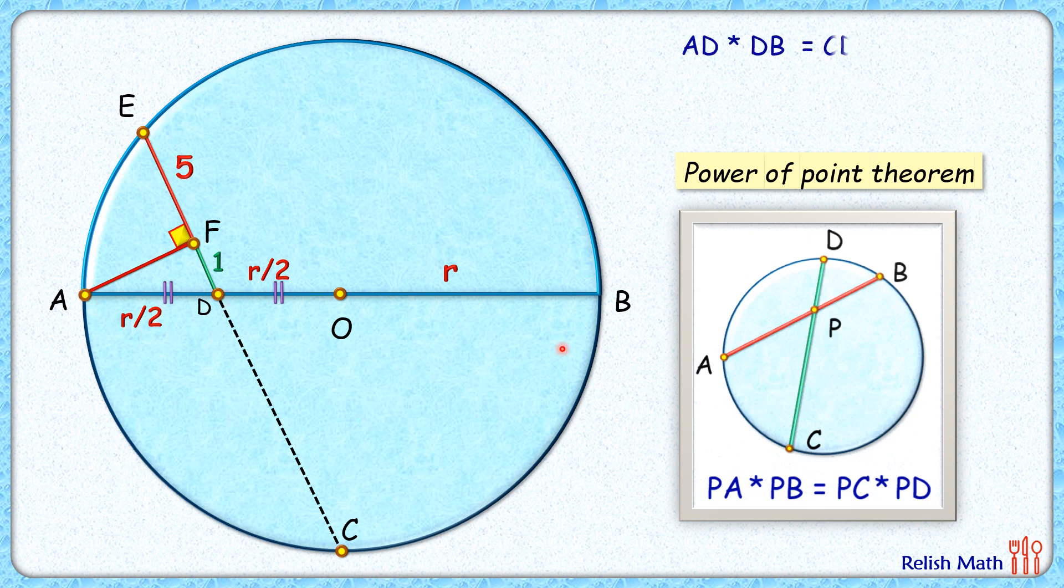Now if you look carefully, AD length is r/2, and DB length is r plus r/2, or 3r/2. So it will be r/2 times 3r/2. And CD length we are not aware of, but DE length is 6 centimeters. Now we have to find the length of CD and then we can solve the equation to get radius r.